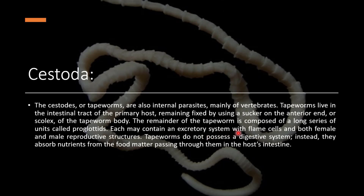Each proglottid contains an excretory system with flame cells and both male and female reproductive structures. Tapeworms do not possess a digestive system; instead, they absorb nutrients from food materials passing through them in the host's intestinal tract.